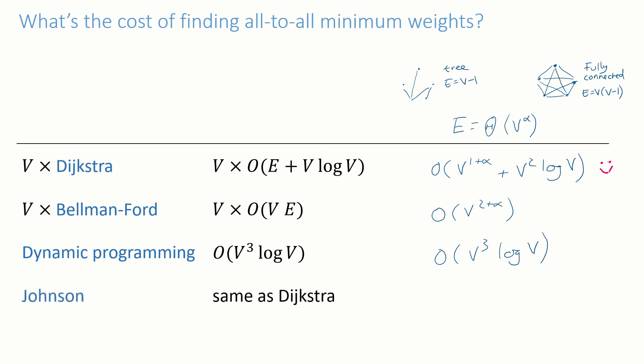What we're going to talk about in this video is a very clever algorithm called Johnson's algorithm, which has the same running time as running Dijkstra from every vertex, but which also works with negative edge weights.